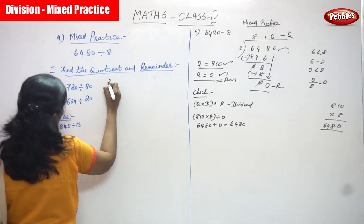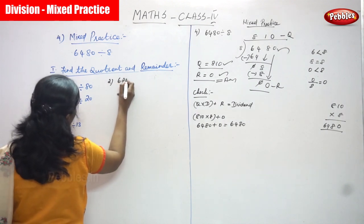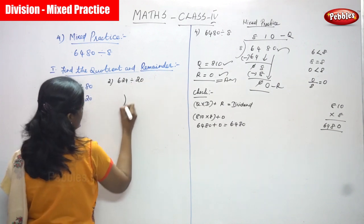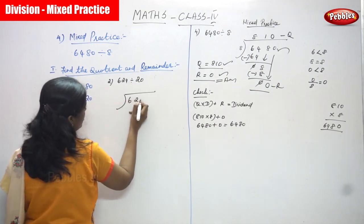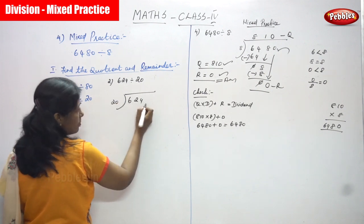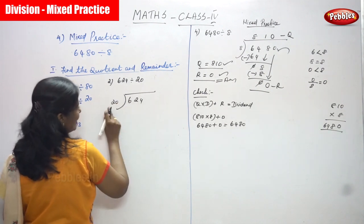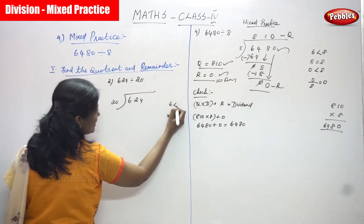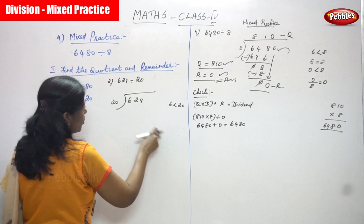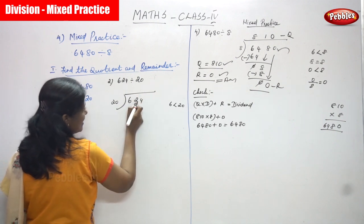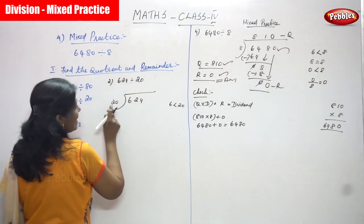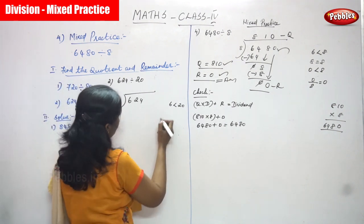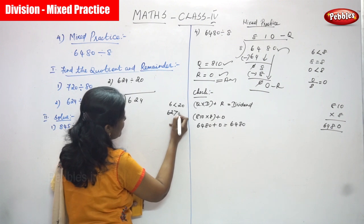The second sum: 624 is divided by 20. So 624 is the dividend and 20 is the divisor. First you have to compare — 6 is less than 20, so you can't divide. You take the next digit. This is a three-digit dividend and a two-digit divisor. 62 is greater than 20.